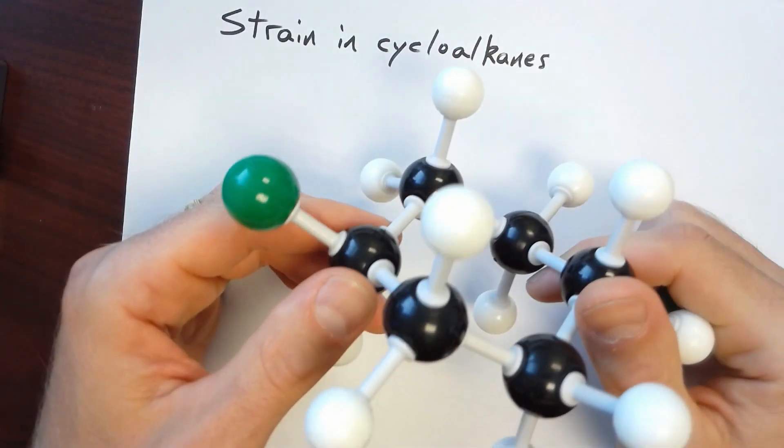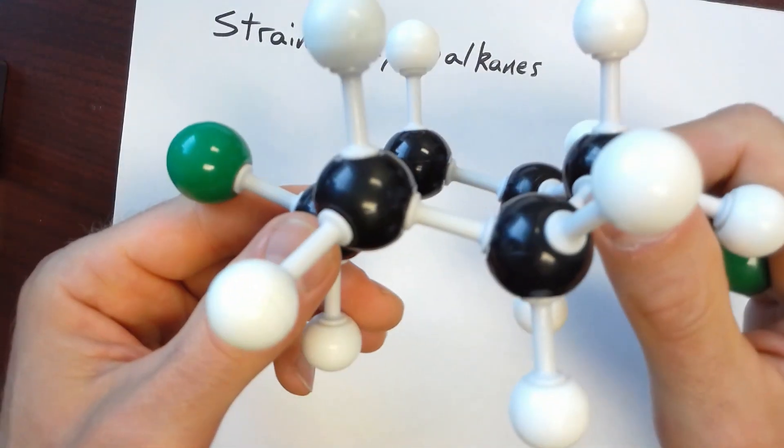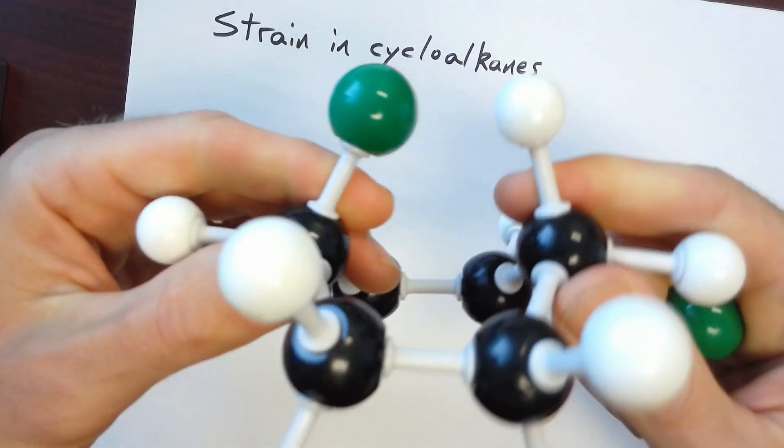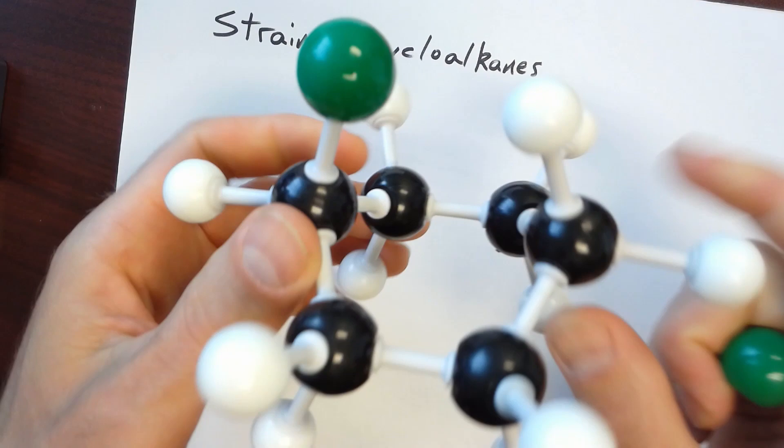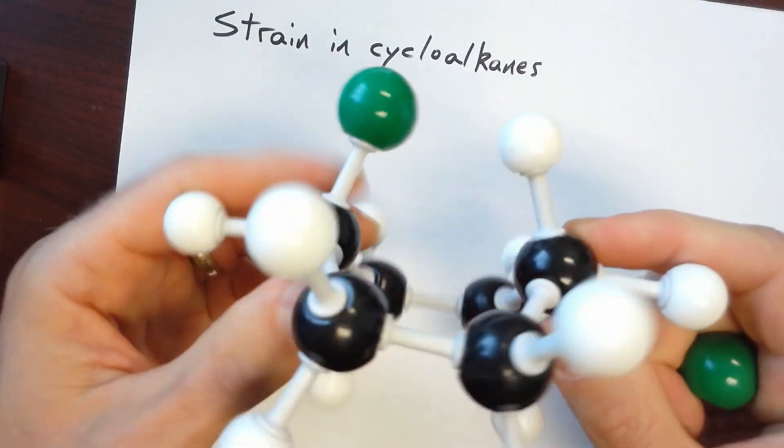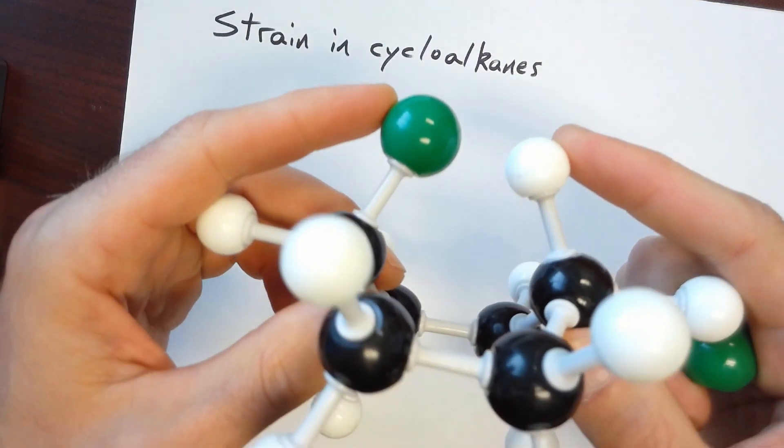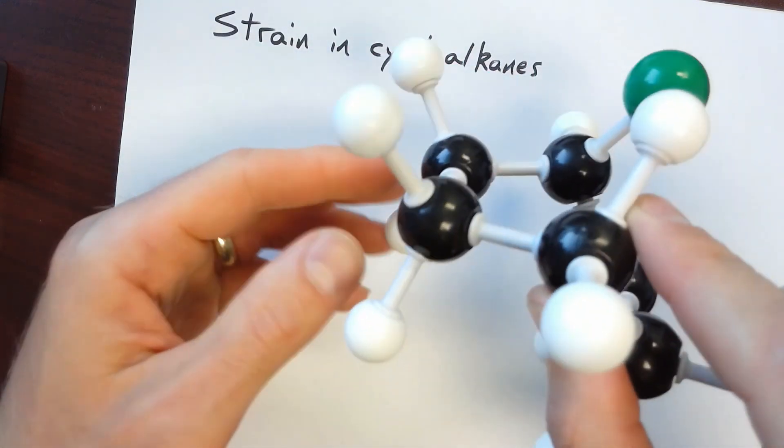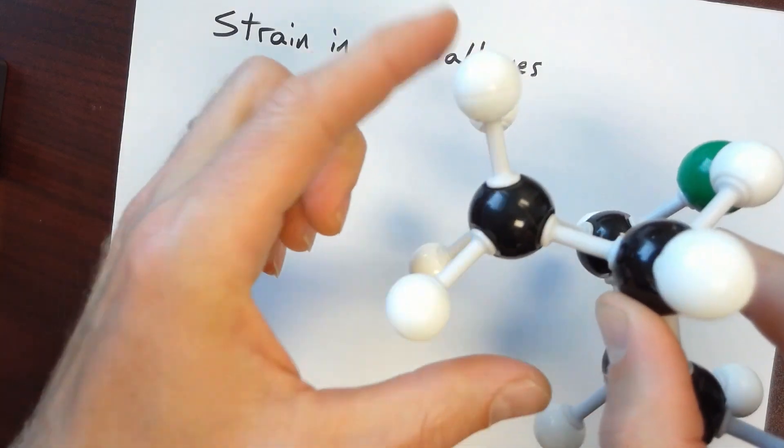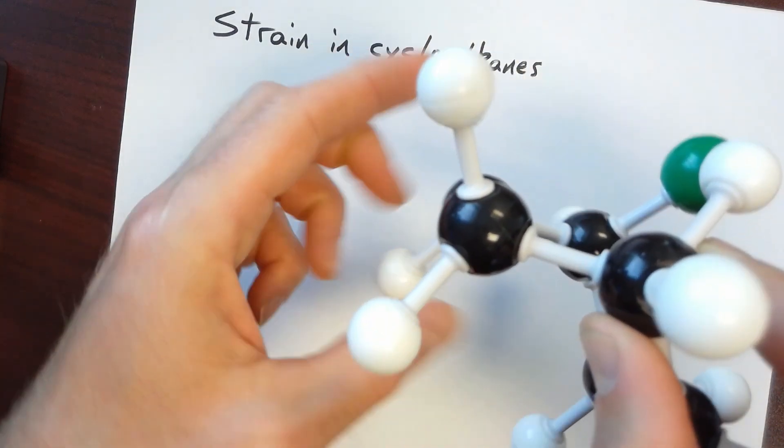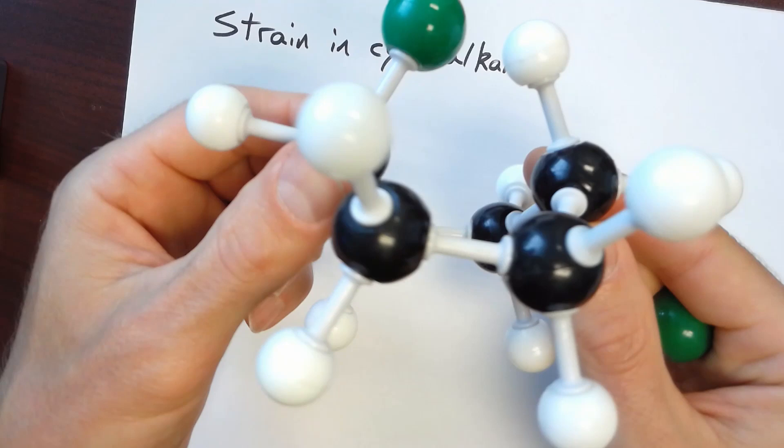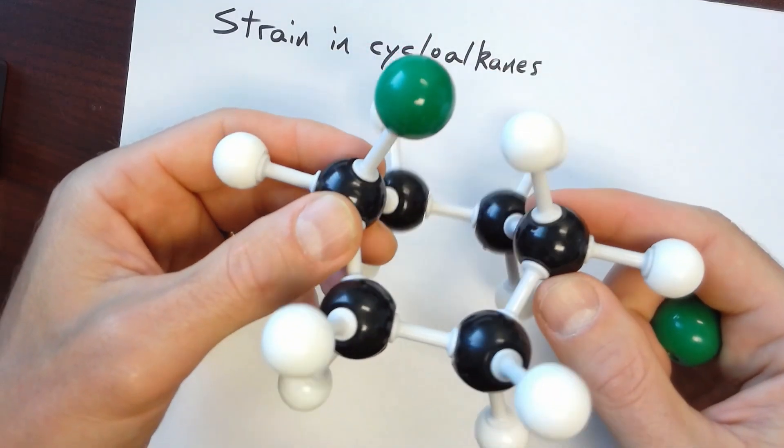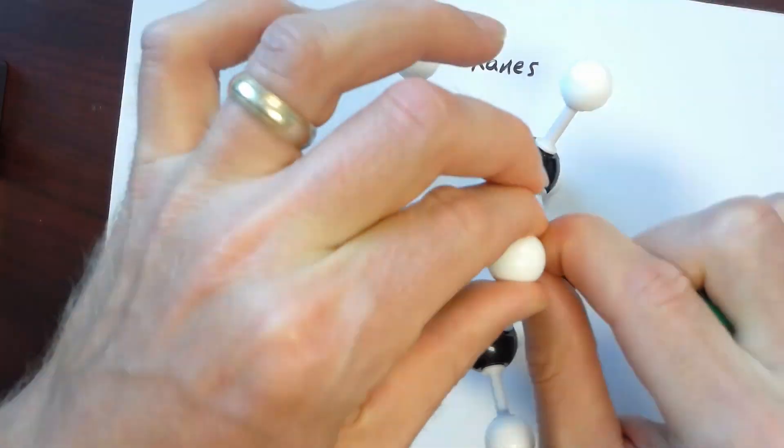In addition to the chair conformation, cyclohexane can also exist in what's called a boat conformation, although the boat conformation has additional strain. Notice that these two substituents are in much closer proximity. In addition, if we look down the axis of these bonds, we have torsional strain. So the boat conformation is less stable than the chair conformation, unless there's something special about the molecule.